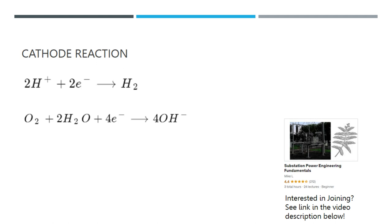The electrons created at the anode travel to the cathode via the metallic electron channel, where they are rebonded. The electrolyte serves to dissolve the metal ions generated at the anode and supplies the ions required for the cathodic reaction. Water or a solution containing water is the most typical electrolyte, and this could be tap water, sea water, water trapped in soil's pores, or rainwater.